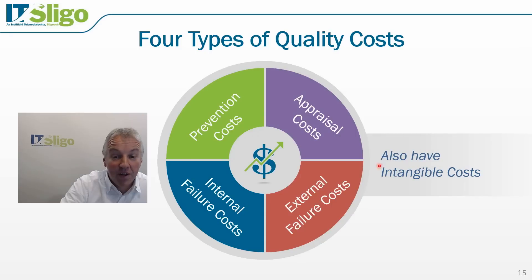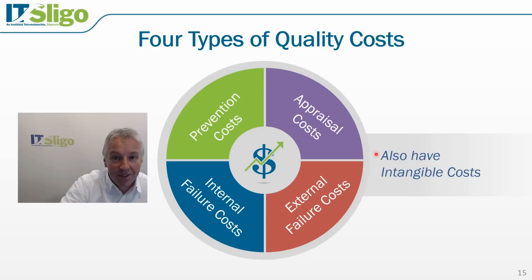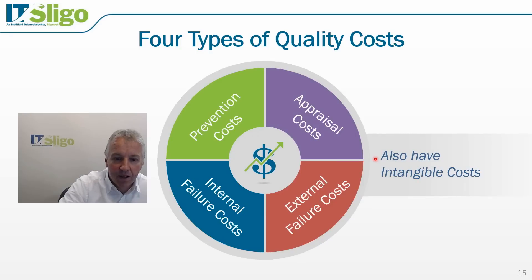There's also a fifth area — intangible costs — where you can't always put a real value on it, but it affects your brand, image, and goodwill. For example, you could have two car models with exactly the same specification — one is a BMW and one is a relatively unknown brand. The difference in cost between the no-name brand and the branded product is really the value of that brand, and that is very important.